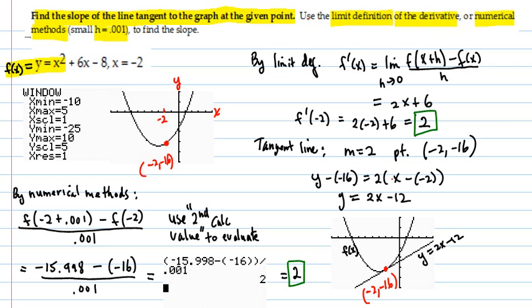Here's the function at x equals negative 2. We graph it and we designate that point negative 2, negative 16, right here.